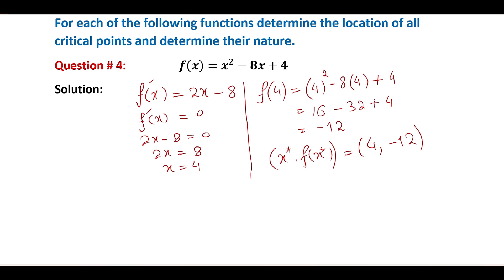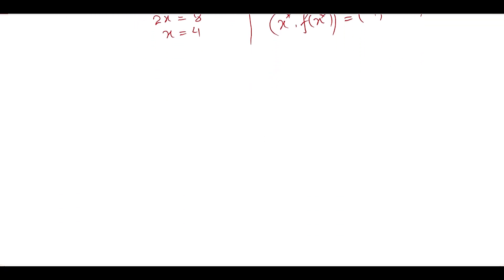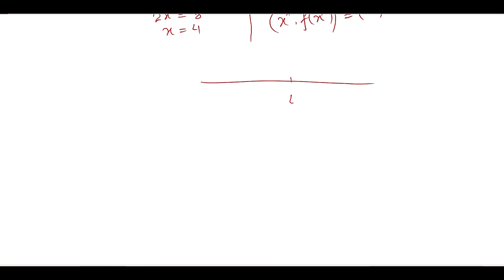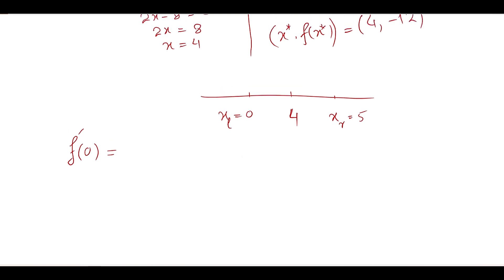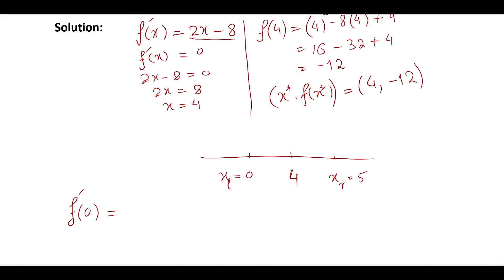Next, we will use the first derivative test to check whether the critical point (4, -12) gives us a relative minimum or maximum. For that, we choose a point to the left of 4, which is 0, and to the right of 4, which is 5. First, we substitute into the first derivative.